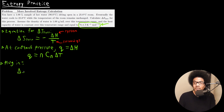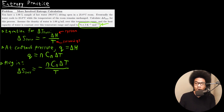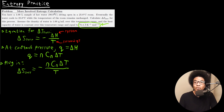Plugging this in, we get that delta S for the surroundings equals negative n times Cp times delta T over the temperature of the surroundings. We need the number of moles of water. We've been given the molar heat capacity, and we know the temperature drops from 90 degrees C to 25 degrees C — so the only thing we need to calculate is how much water we have.